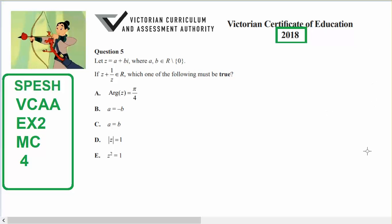This is VCAA Specialist Mathematics 2018 Exam 2 Multiple Choice. Let z = a + bi where a and b are both real numbers and can't be zero.